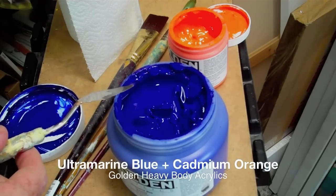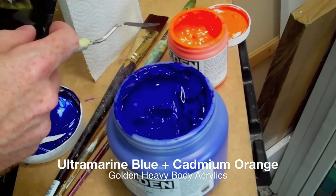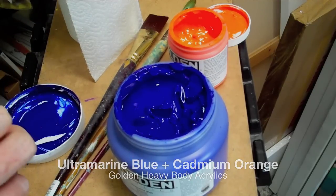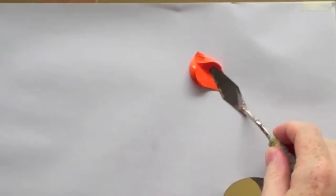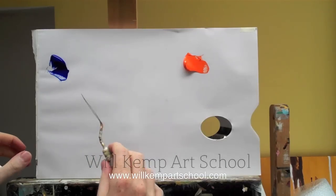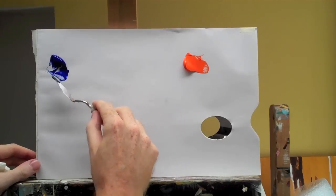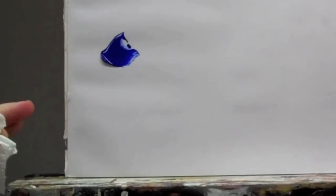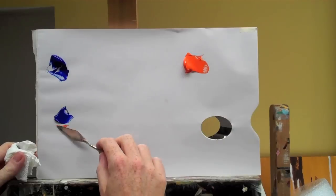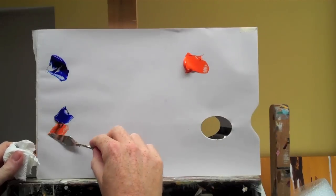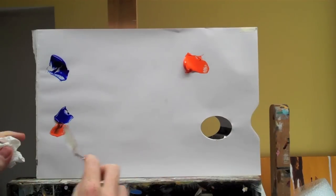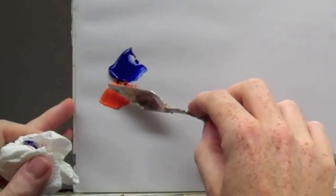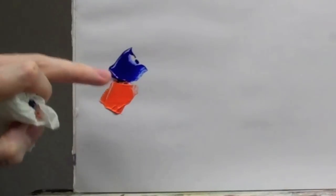So here we've got ultramarine blue and cadmium orange so I can show you a quick example of complementary colors and how they mix together. With two complementary colors, when you have them both next to each other, if we had a bit of this blue directly next to some of the orange, you see what happens.